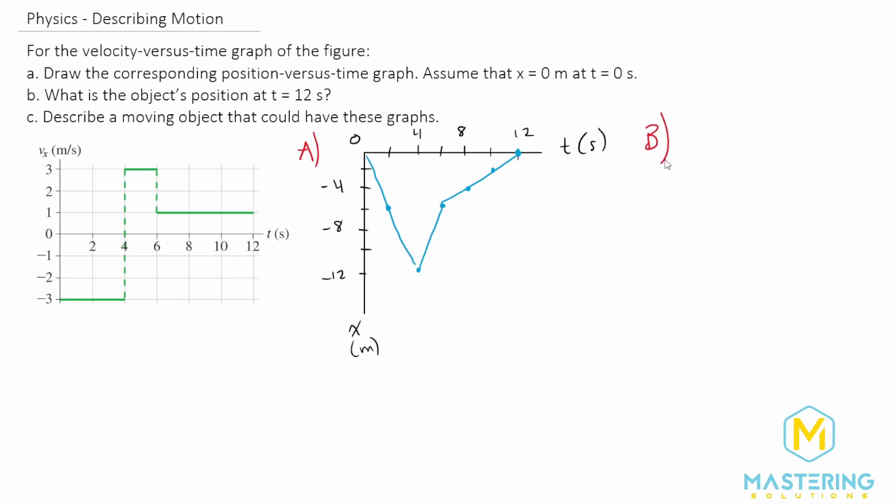For part B, they say, what is the object's position at t equals 12 seconds? Well, we just found it from graphing our position versus time graph. At 12 seconds, it's at zero meters.